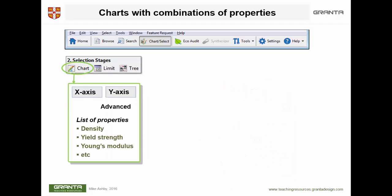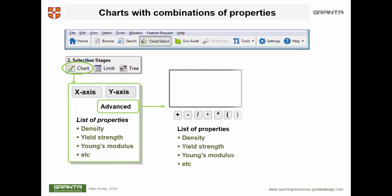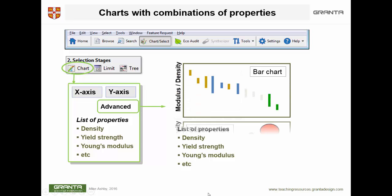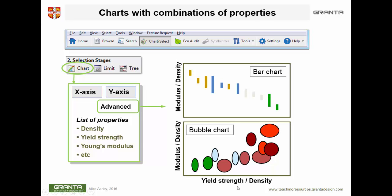You can do more than that — it's possible to make functions of properties. Going through the same sequence, you select the additional option called Advanced from the pull-down menu. Advanced allows you to make functions of properties. For example, to plot modulus divided by density — that's specific modulus — you click on modulus divided by density, and the system plots a bar chart of that. This is a very useful feature for more advanced applications and will be covered in later units.